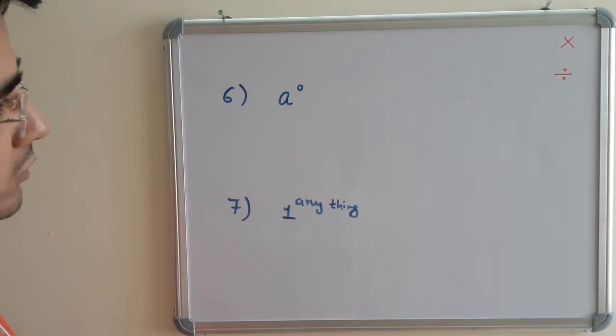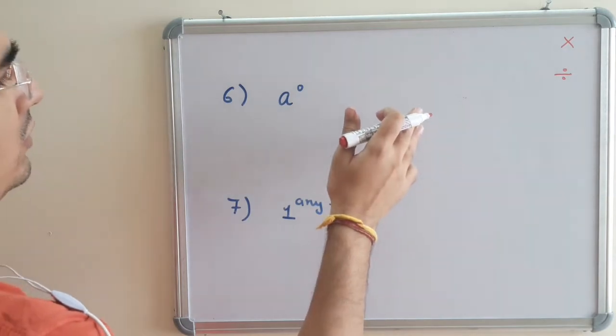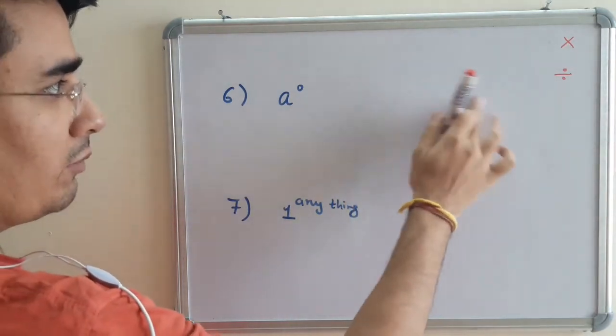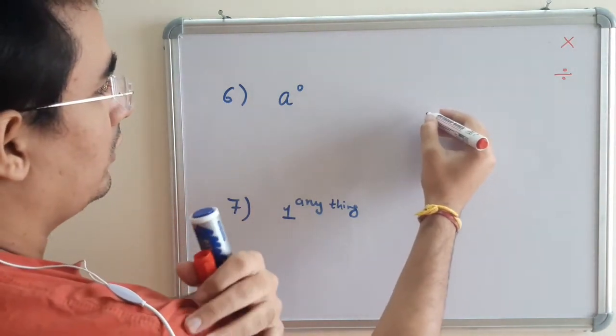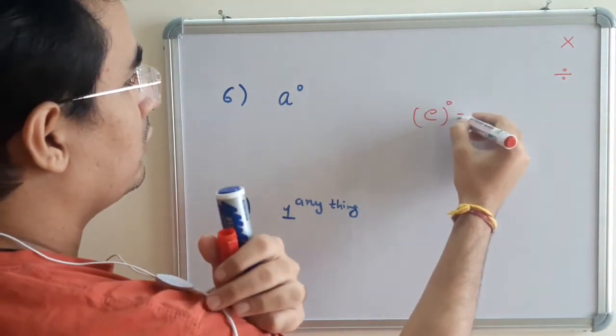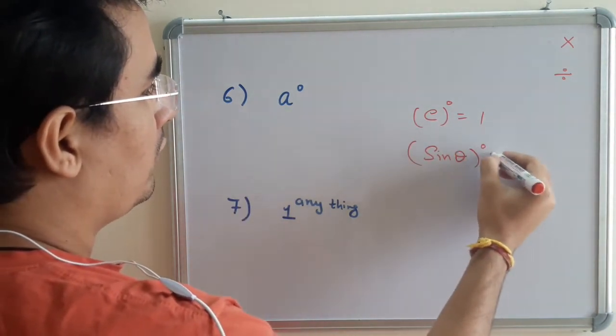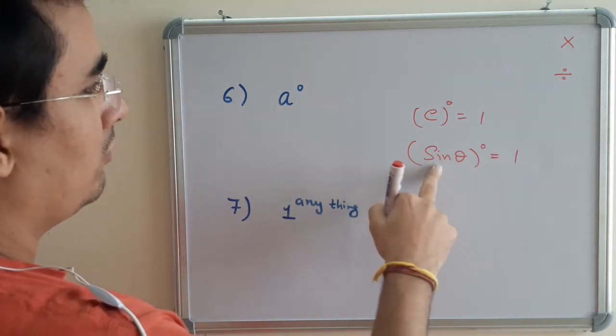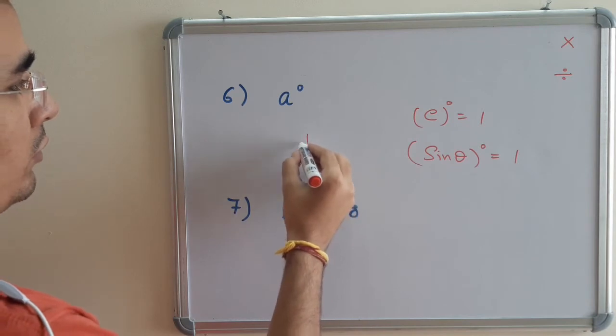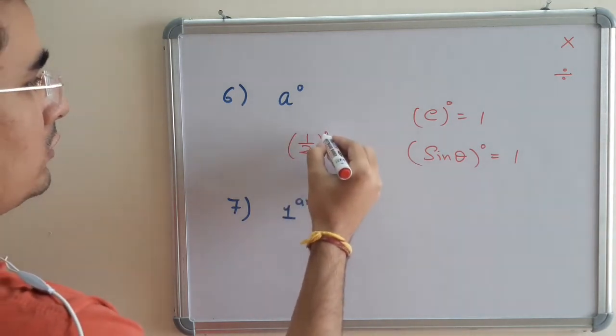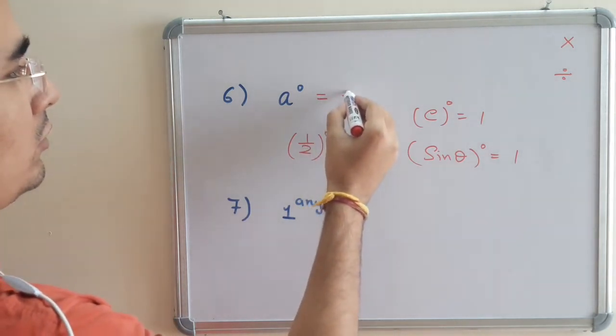Our sixth property is very important: a raised to the power 0. Anything raised to the power 0, when I say anything it means simply anything. If it does not make sense to you, even then suppose e^0, that is also 1. So sin(θ)^0, that is also 1. Suppose (1/2)^0, that is also 1. So anything raised to the power 0 is 1. If you want to understand why, we have made a separate video for that.